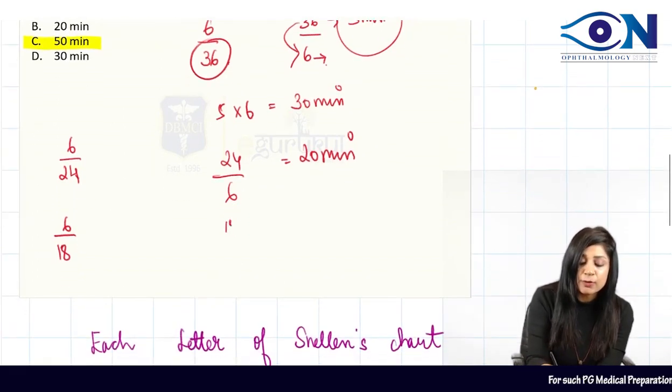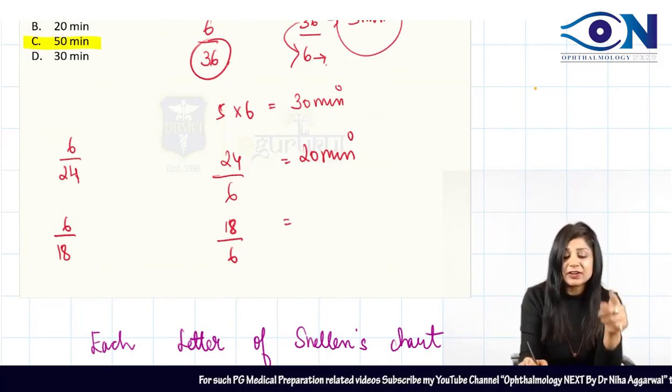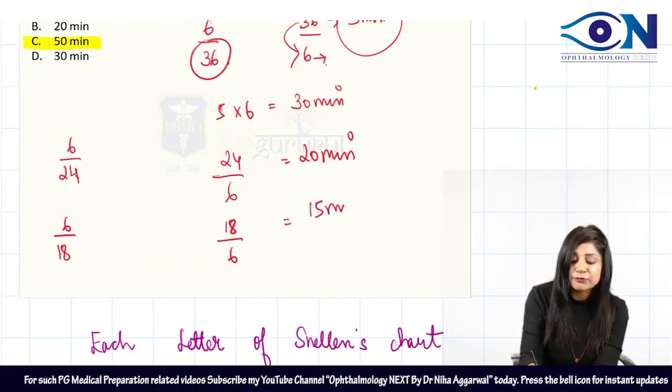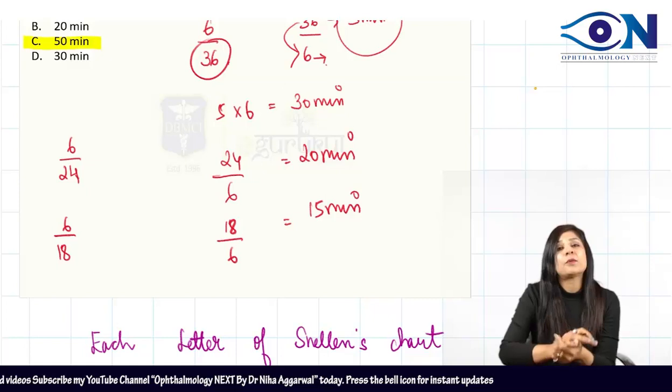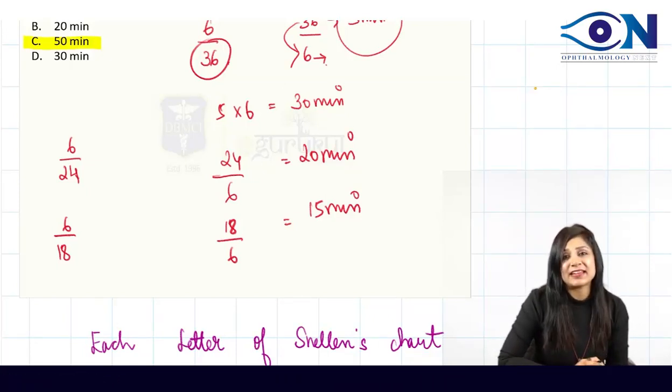Similarly, if I talk about 6/18, how much distance is decreasing? 18 by 6, that means 3 times. 5 into 3, so this will be 15 minutes.